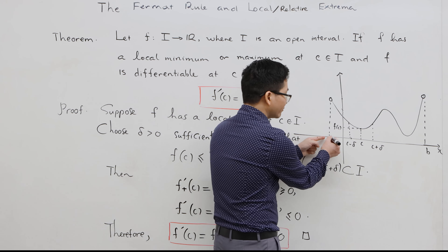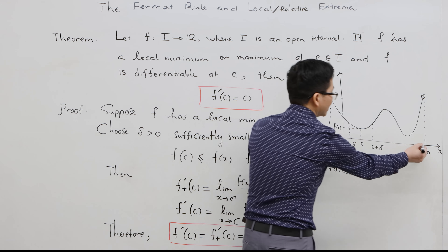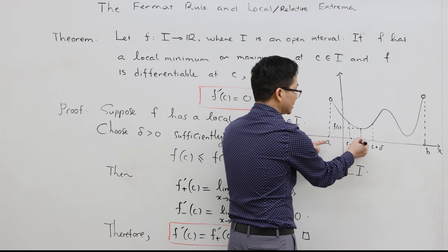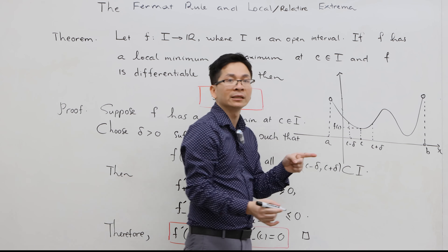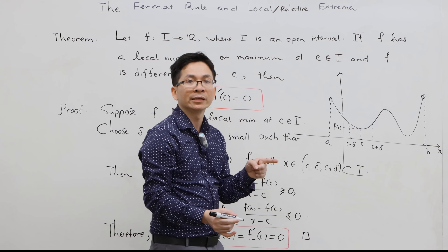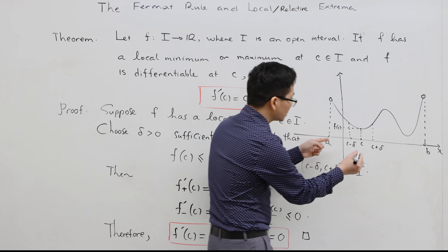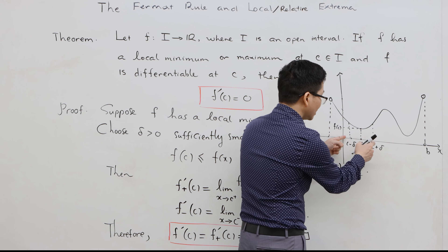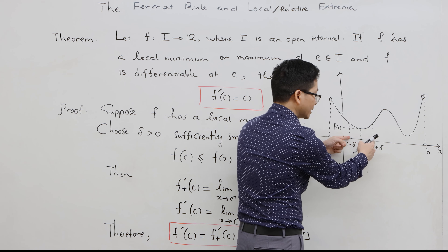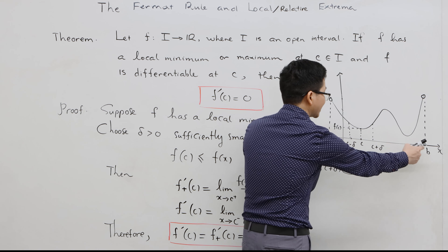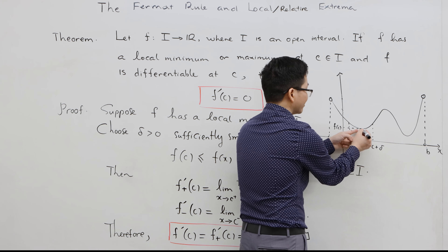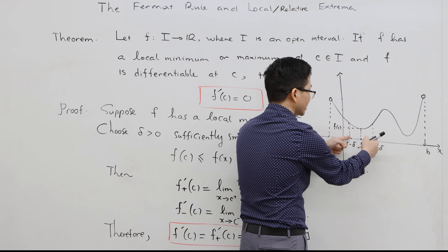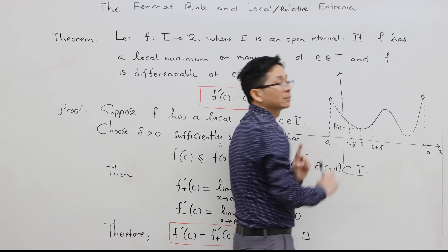In this figure, I is the open interval from a to b, and c is a number in this open interval. We choose delta sufficiently small such that this interval is a subset of I and f(c) is smallest on this open interval.